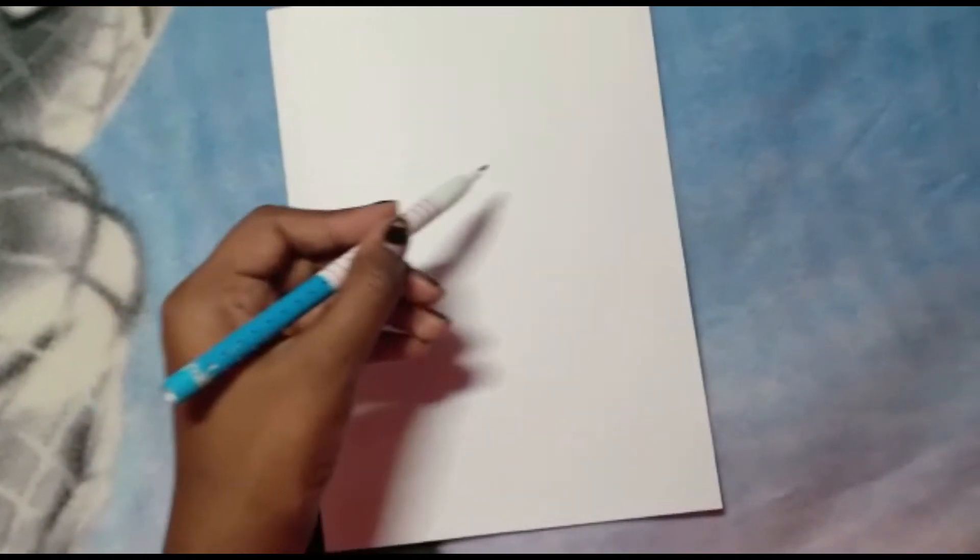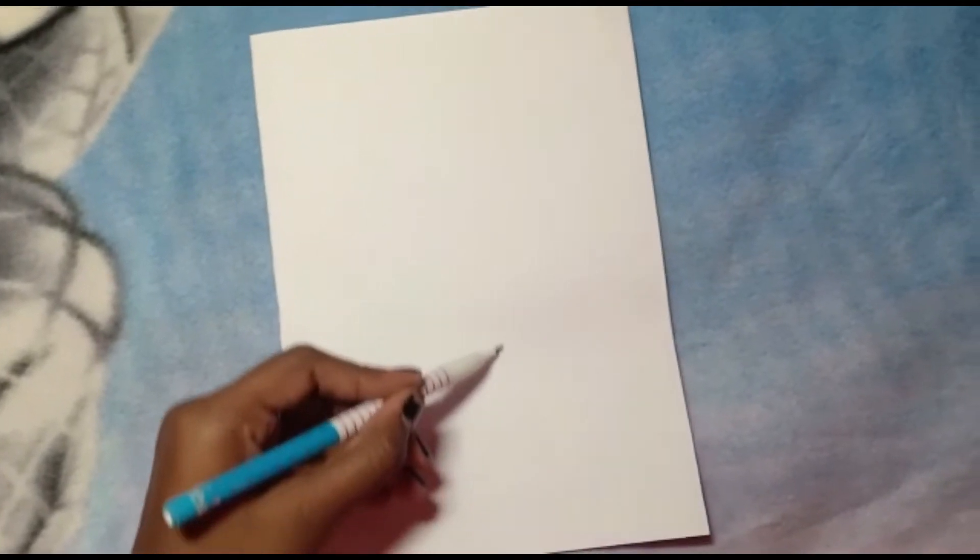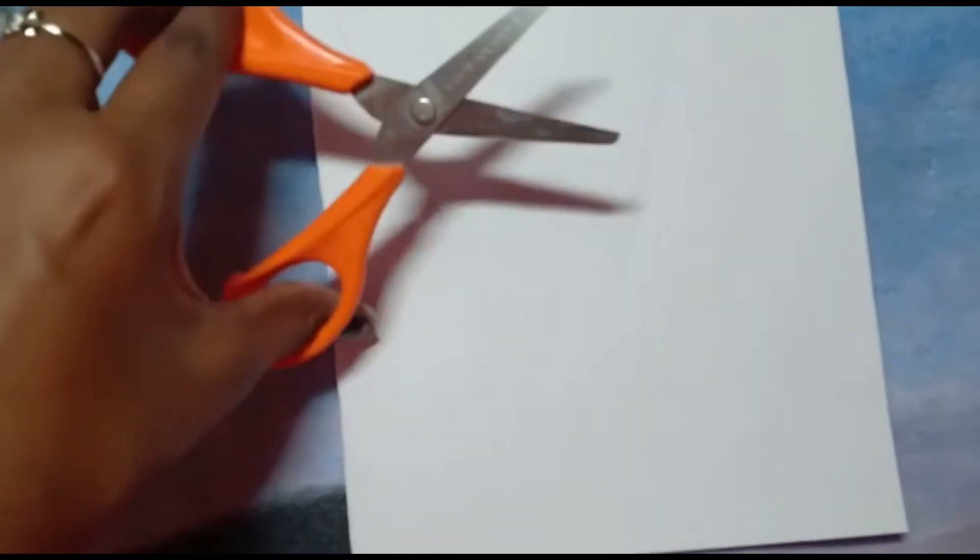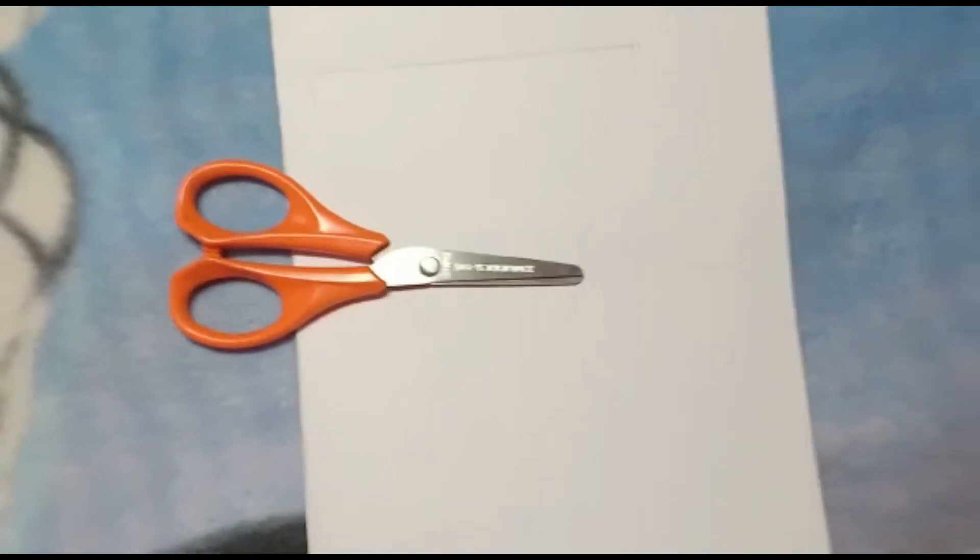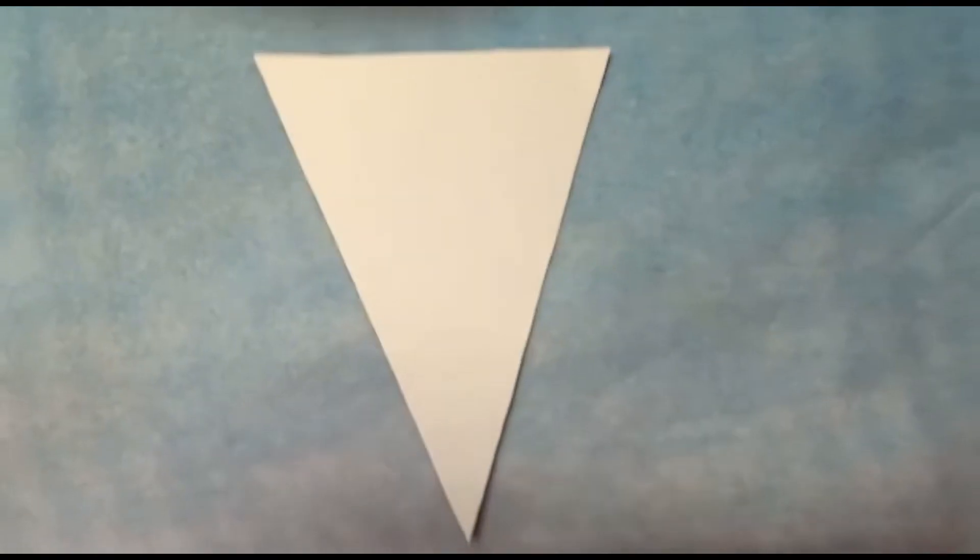And then here I'm taking a pencil and I'm going to draw a triangle. So here I'm done drawing my triangle as you could see. I drew it very light so you can't see that properly. Here I'm taking scissors and I'm going to cut it. Perfect.